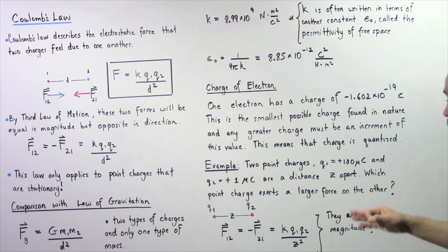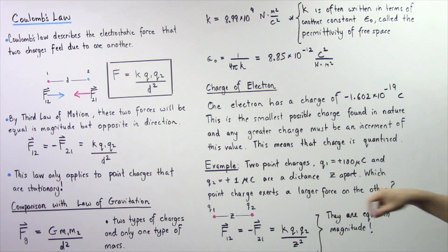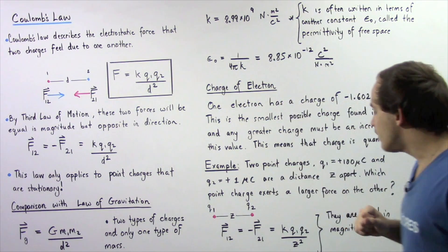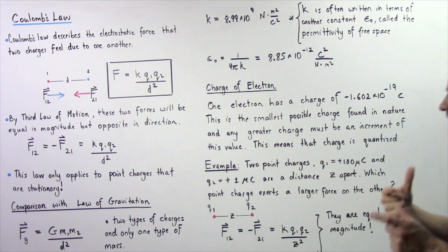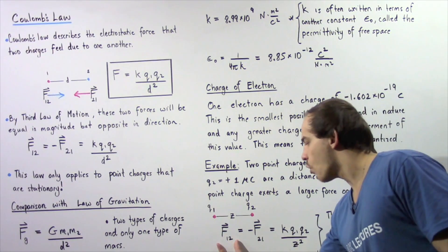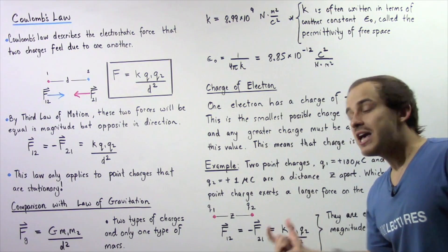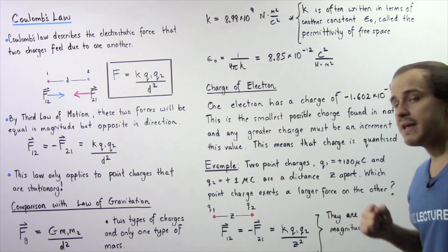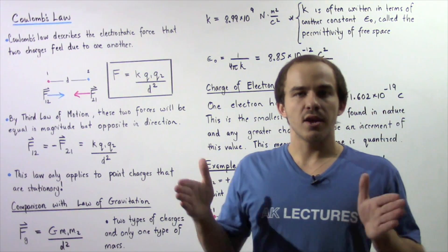If we knew the value of Z, we could simply plug in our two charges, the constant k, and the distance Z into Coulomb's law. That would give us not only the force on charge 1, but also the force on charge 2. They would have the same magnitude but would be opposite in direction.